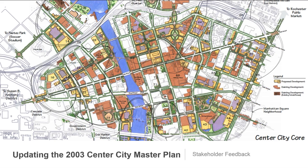We also wanted to use the model to review some major projects and some site plan review. In cases where we had a major building proposed for one of these new development sites, we wanted to be able to take a look at the proposed building's height and mass in a 3D context to evaluate how that would affect the surrounding public spaces and the urban form. And finally, we really wanted to use the model to help with public engagement during stakeholder meetings.